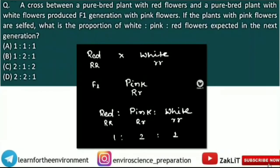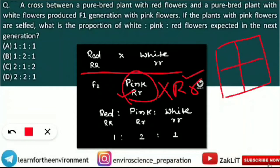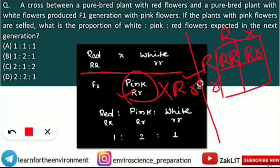When we solve this, we use a Punnett square — the best technique for this. Red was crossed with white to produce pink, and now that pink flower is crossed with itself (selfing). So Rr crossed with Rr: one parent provides R and r alleles, and the other parent also provides R and r alleles.